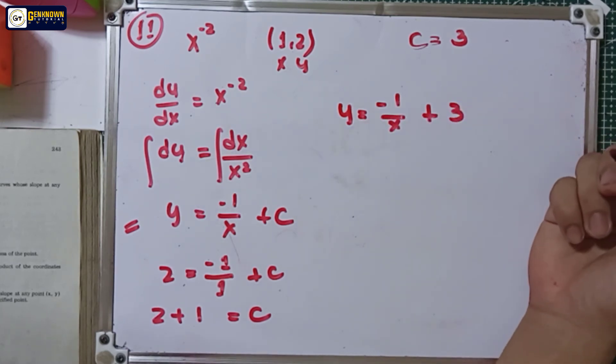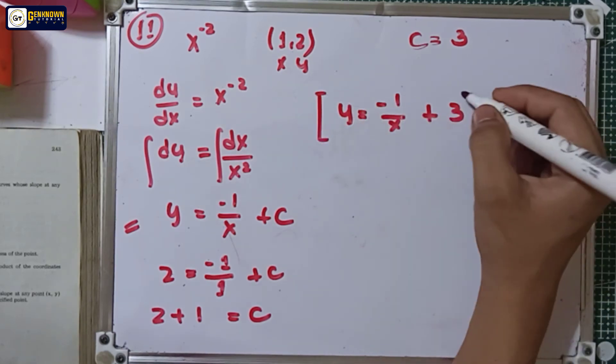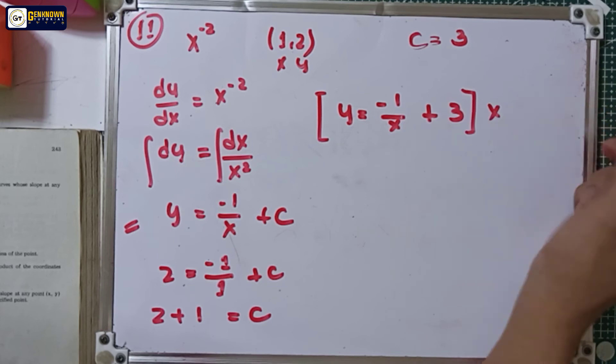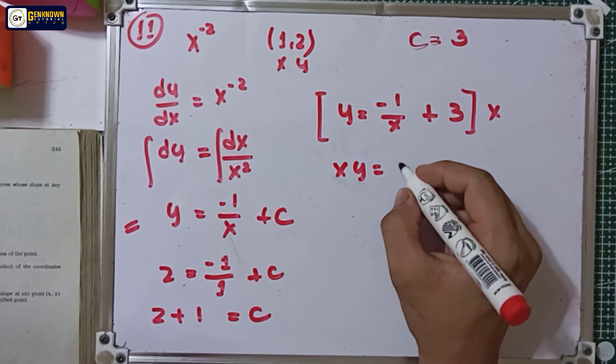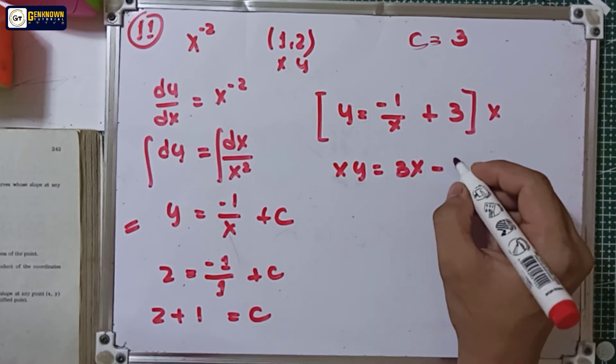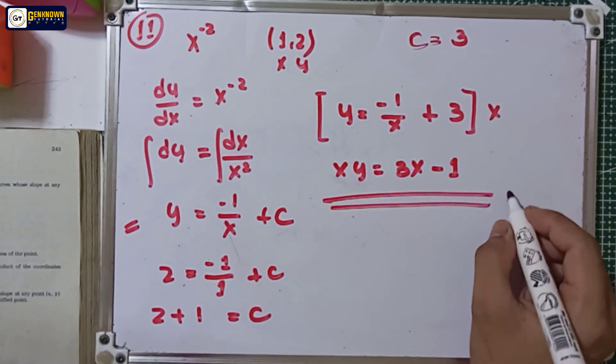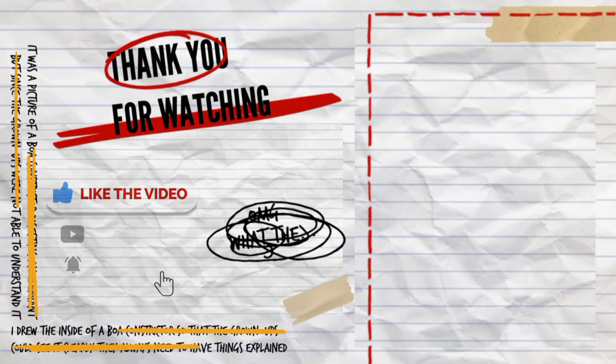So we can simplify this one by multiplying the whole equation by x. So x multiply by y is equal to 3x minus 1. So this is the final answer.